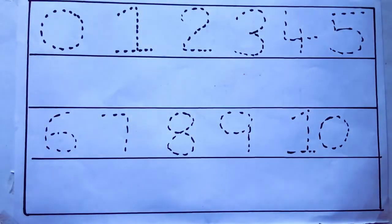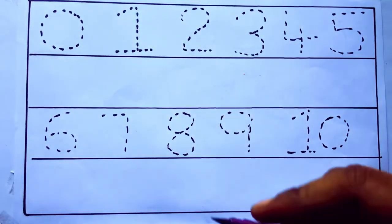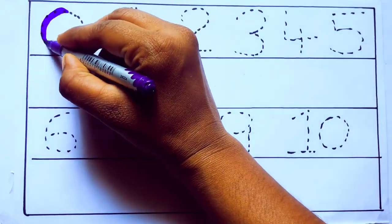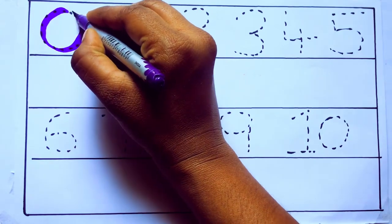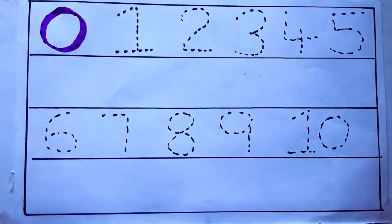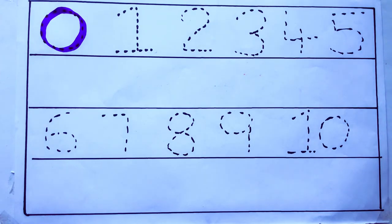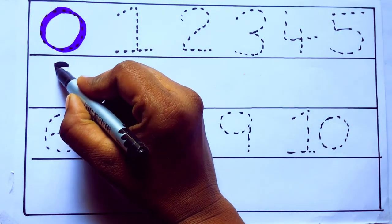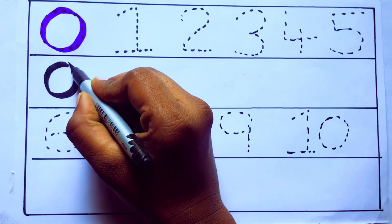Let's draw numbers. Violet color 0, Z-E-R-O. 0.